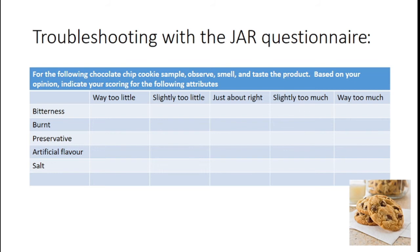Just about right doesn't work well with negative attributes. Say my cookie is burnt — burnt is a negative attribute in this context. Asking 'is the burn way too little, slightly too little, just about right, slightly too much, way too much' doesn't quite work. You have to be really particular. If there are negative attributes, perhaps Likert — coming up next in this video series — is more appropriate. Just about right works well on positives but not on negatives.